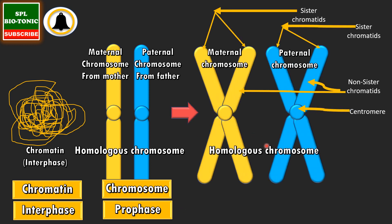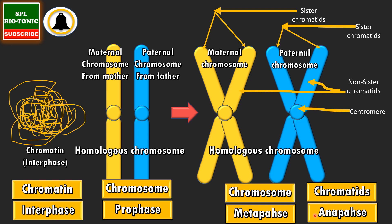We have seen some of this information in a previous video. The two arms of the same chromosome are called sister chromatids. The chromatids of homologous chromosomes are called non-sister chromatids. Remember, the genetic material in sister chromatids is the same, whereas the genetic material in non-sister chromatids may be same or it may be different. The two chromatids are joined together by the centromere. These sister chromatids get separated during anaphase, so chromatid is a term for anaphasic structures.